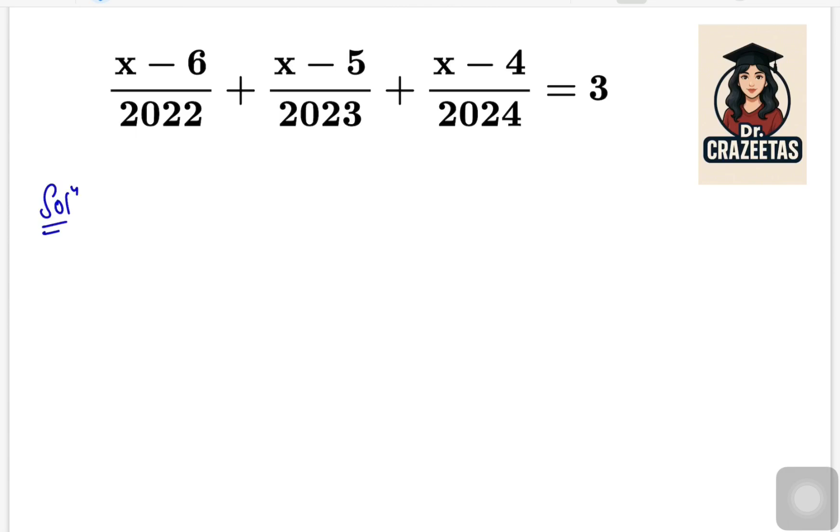6, 5, 4 in the numerator, then in denominator there is 2022, 2023, 2024, and then on the right side there is 3. So on the left side you can see 3 fractions. There is a linking between all the terms of this problem and we need to find the value of x.